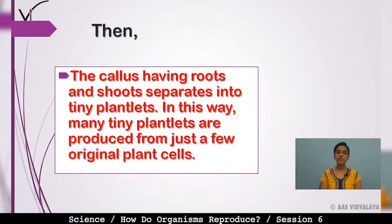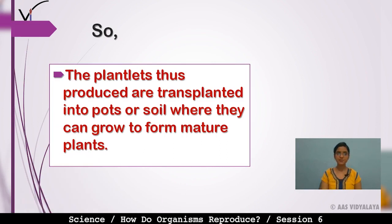The callus having roots and shoots separates into tiny plantlets. In this way many tiny plantlets are produced from just a few original plant cells. The plantlets produced are transplanted into pots and soil where they can grow to form mature plants.